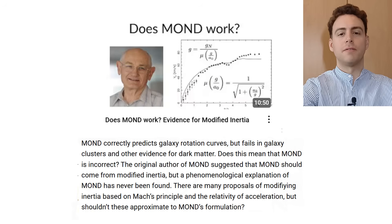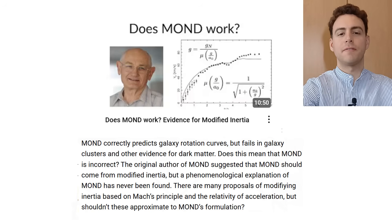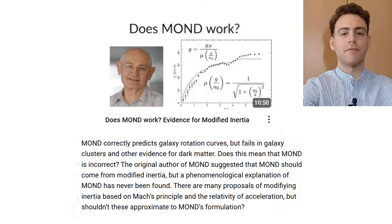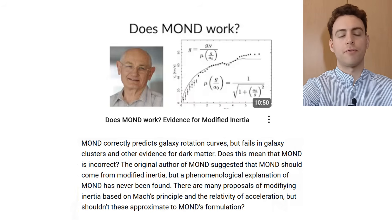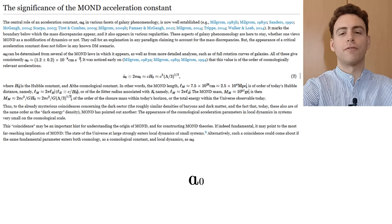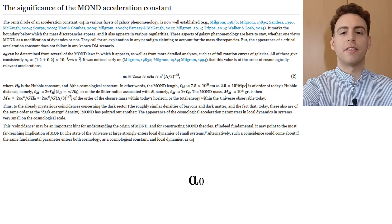We have explained MOND in our previous videos, but in short, it is a primitive theory of dynamics with which one can fully explain the rotation of all galaxies without the need for any dark matter, with a single free parameter for all of them. This parameter is a constant of acceleration scale, and we all think of course that it is not fundamental but derived from a complete theory which explains MOND.